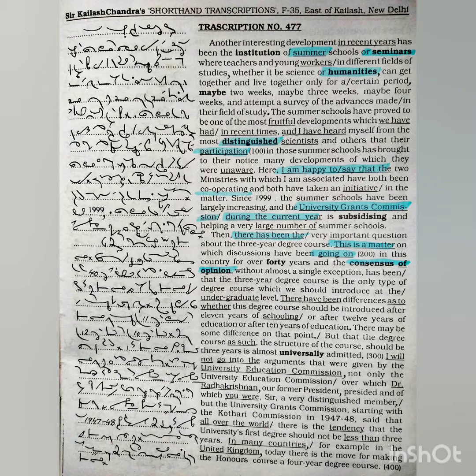but the University Grants Commission starting with the Kothari Commission in 1947-48 said that all over the world there is the tendency that the university's first degree should not be less than three years. In many countries,